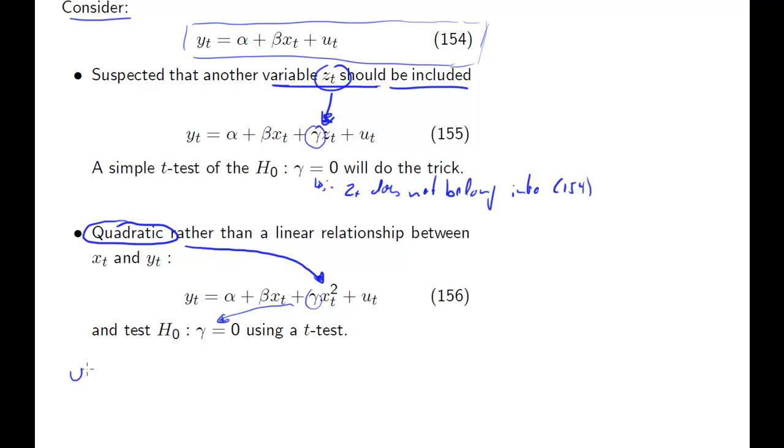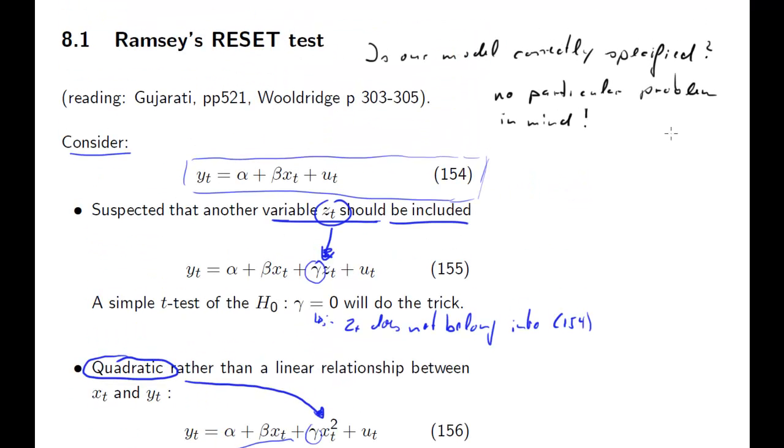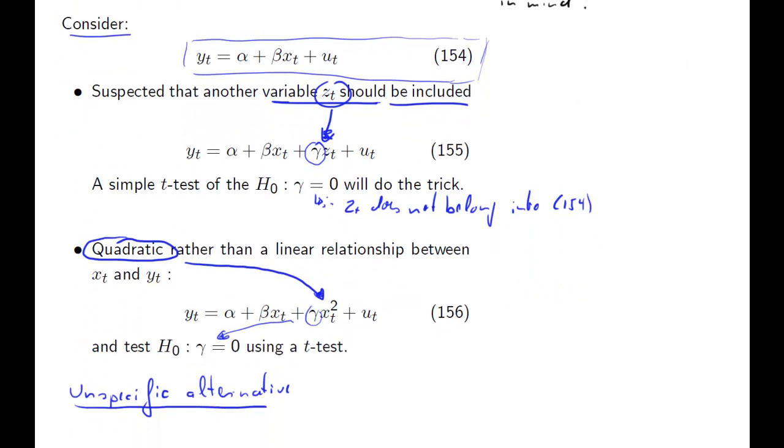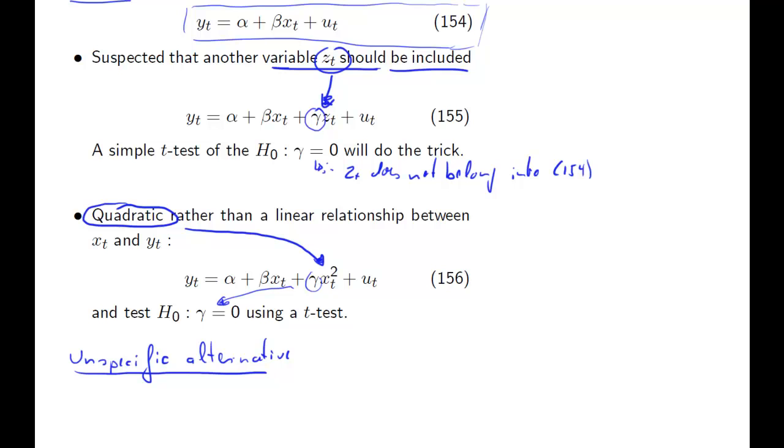The question is now what do you do if you have what we call an unspecific alternative? That's exactly what I said above already. You don't have any particular problem in mind, so you don't think there may be a particular variable missing or there may be autocorrelation or something. You have an unspecific alternative. What are we going to do then? What we want basically is a test that flags up if there is a problem, and then if it does so, we'll have to switch our brain on and think what could the problem be. That's going to be the disadvantage of that test - it will not be able to tell us what the problem is.